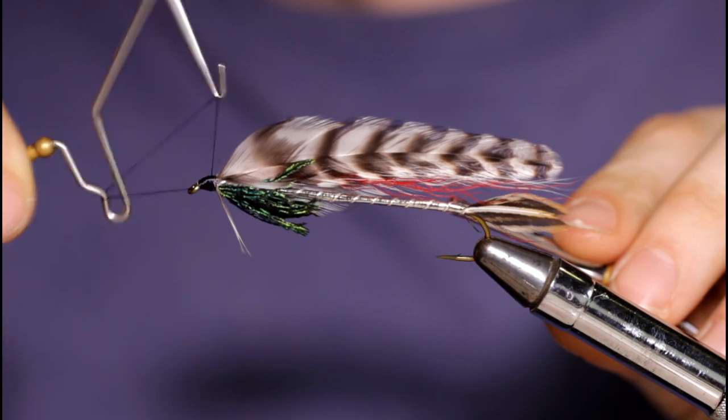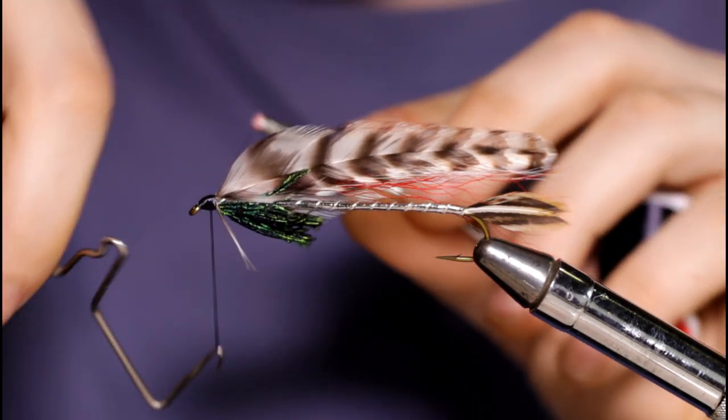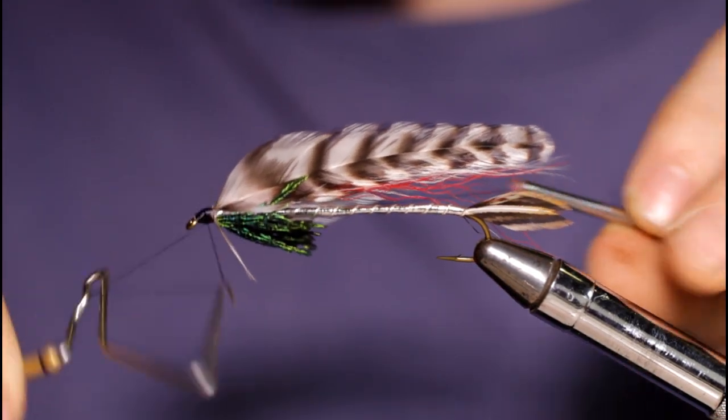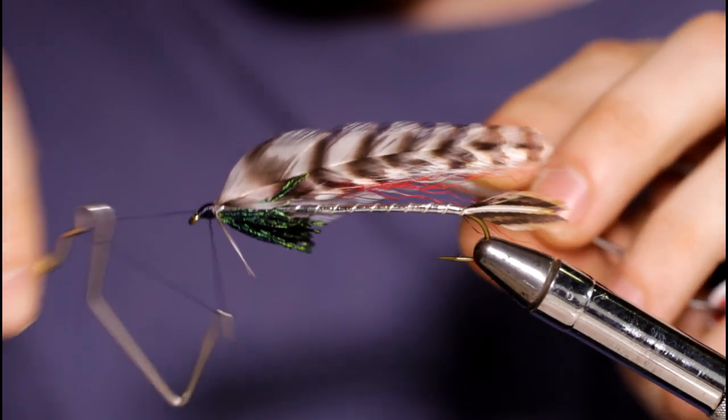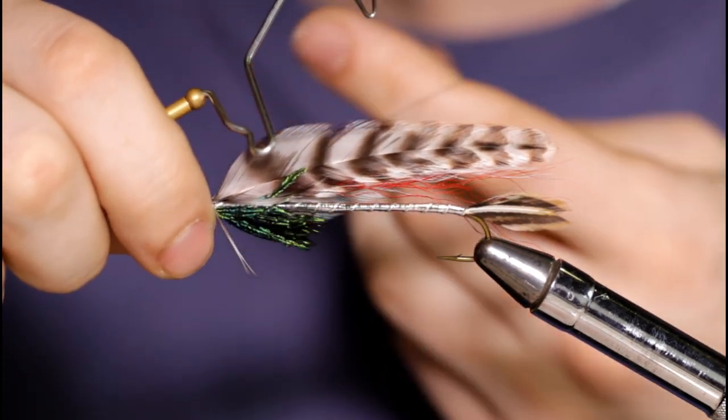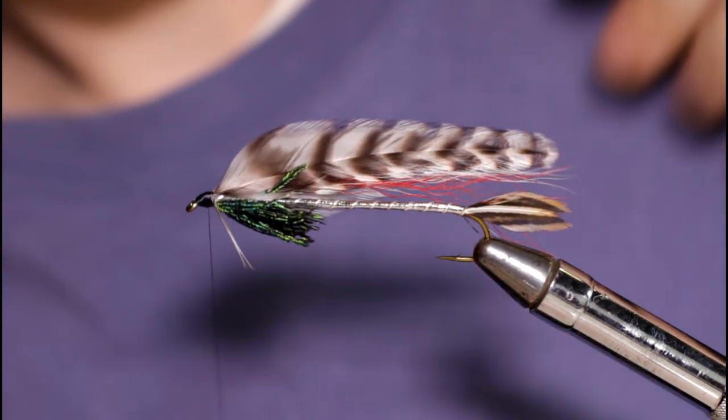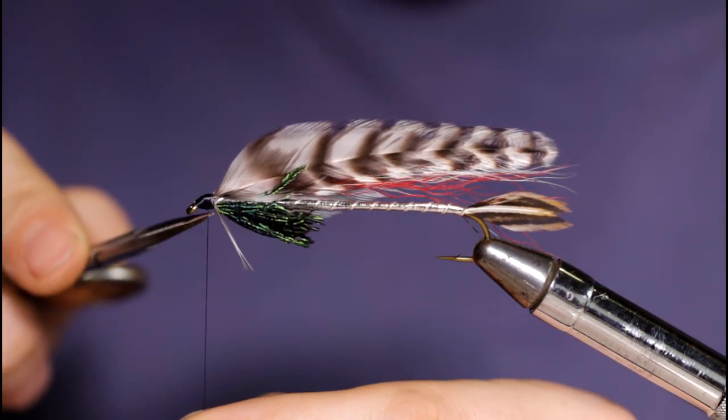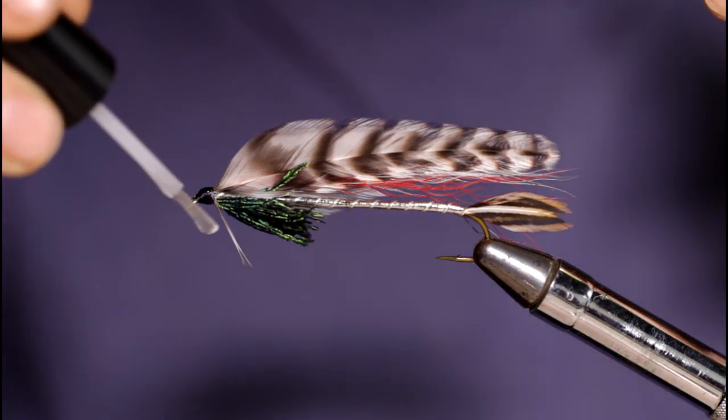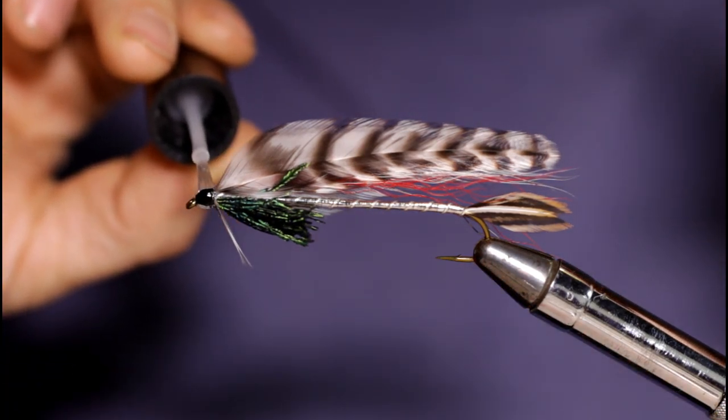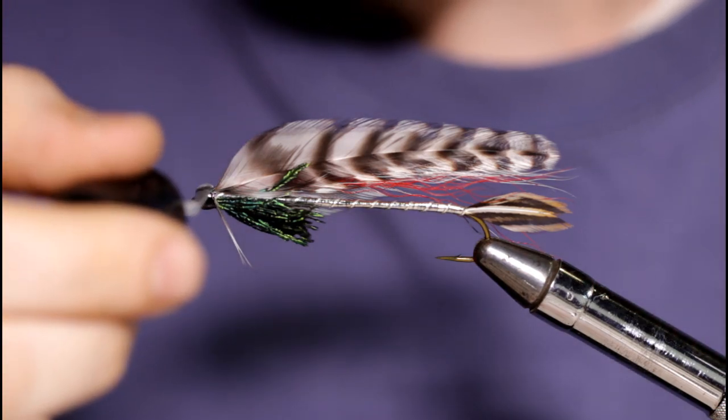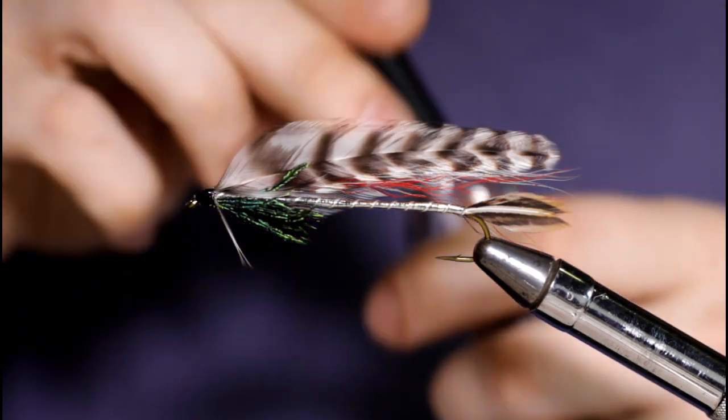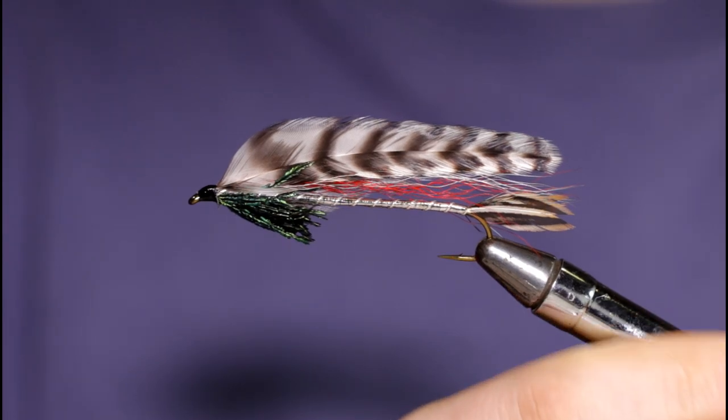So I'll throw in a couple whip finishes here. One and two. Grab my scissors, come in and snip this off. Grab some head cement or lacquer of your choice, put a coat or two on. And I didn't see that little stray fiber, but I snipped that off. And there it is guys, the finished Hurricane.